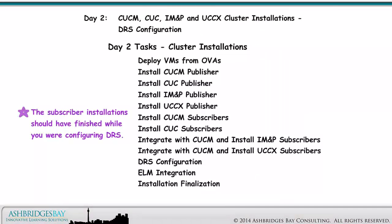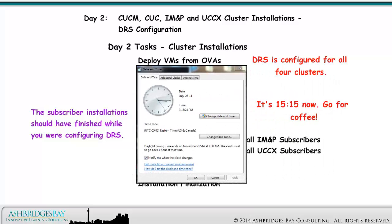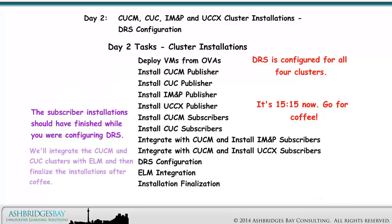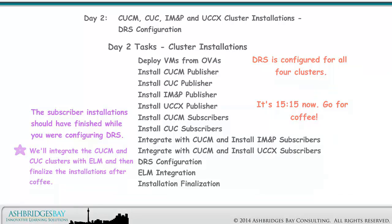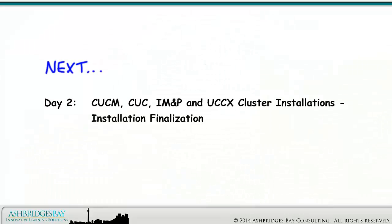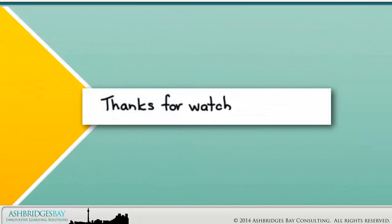The subscriber installation should have finished while you were configuring DRS. DRS is configured for all four clusters — it's 15:15 now, why don't you go for a coffee? We'll integrate the CUCM and CUC clusters with ELM and then finalize the installations after coffee. Coming up next: CUCM, CUC, IM&P, and UCCX cluster installations — installation finalization. Thanks for watching.